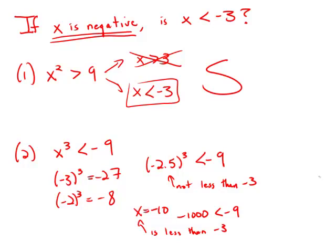In other words, we can pick values that are consistent with statement number 2 that are either greater than negative 3 or less than negative 3. So statement number 2, by itself, does not allow us to distinguish, does not allow us to determine whether x is less than negative 3 or not. So statement number 2 is insufficient.